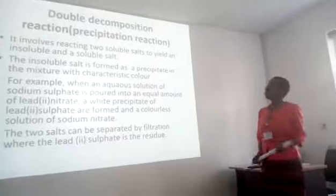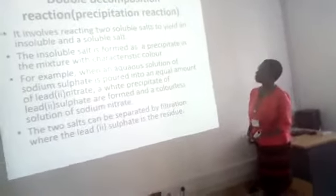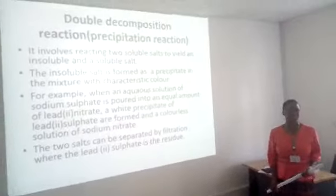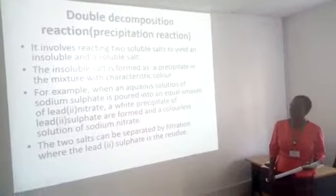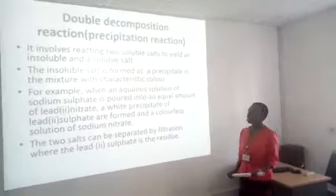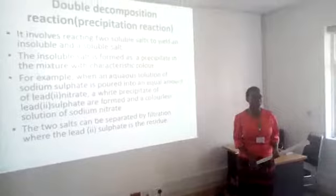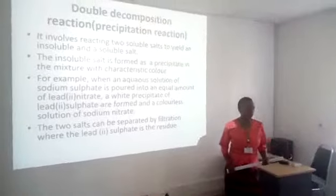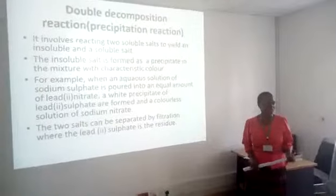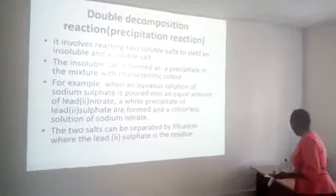In the precipitation method, it involves taking two soluble salts. You mix them in their aqueous states, and the result is the formation of one soluble salt and one insoluble salt. Once the two salts are formed in the mixture, the insoluble salt can be separated using the method called filtration.